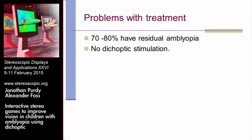It's also not that effective. 70–80% of people diagnosed with a lazy eye still have a lazy eye into adulthood — it does improve vision, but seldom completely. And there's no dichoptic stimulation: they're not training both eyes to work together, so the minute the patch is taken off you can get double vision, and the eyes drift back into their old routine. Once treatment has stopped, you lose the benefit.